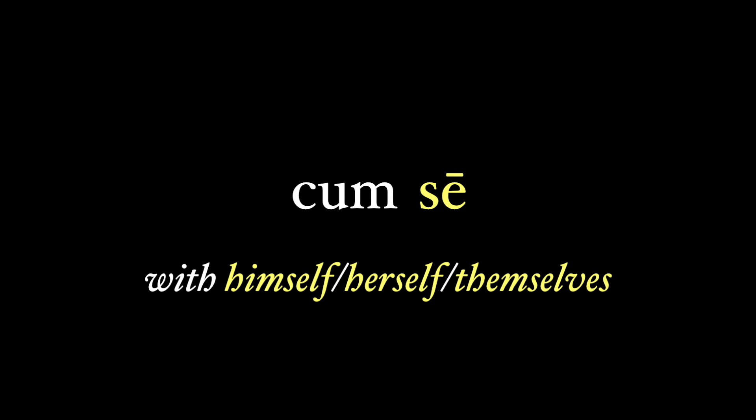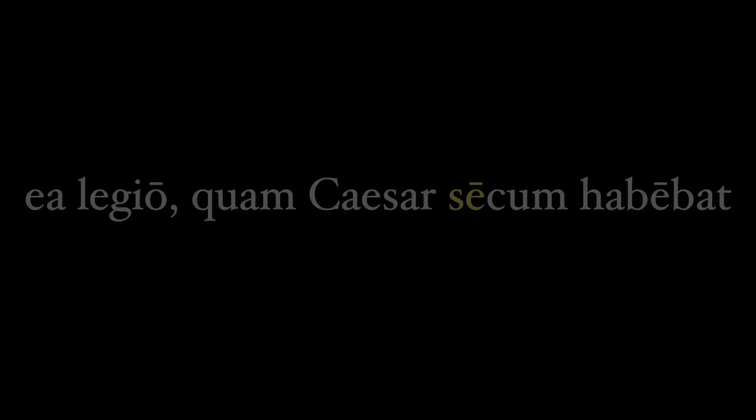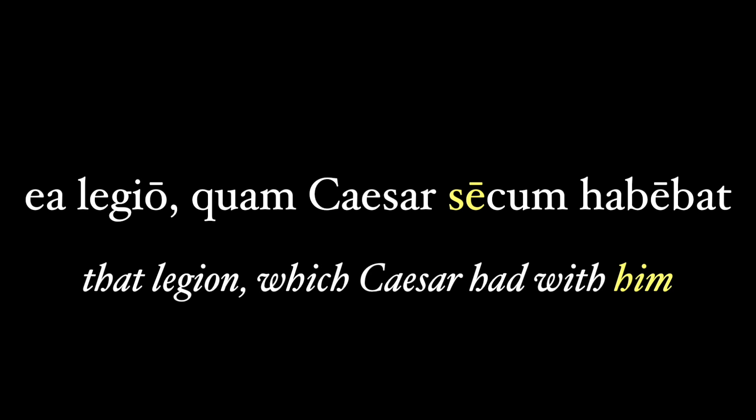If we have a prepositional phrase with cum, the cum appends to the end of the se to create 'secum,' just like with me, te, nobis, or vobis. For example: 'ea legio quam Caesar secum habebat' — that legion which Caesar had with him. The 'him' here refers directly back to Caesar.